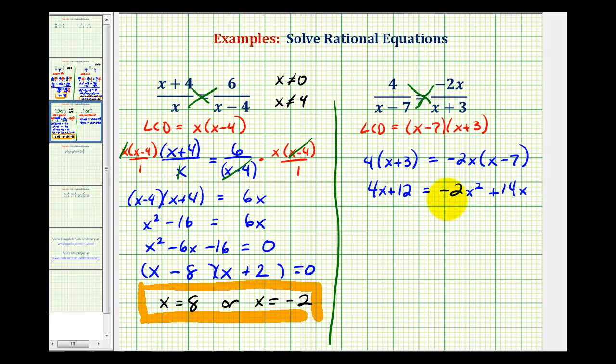Again, notice how we have a quadratic equation, and since we want the squared term to be positive, let's go ahead and add 2x squared to both sides. And since we want the right side to be zero, let's go ahead and subtract 14x at the same time.